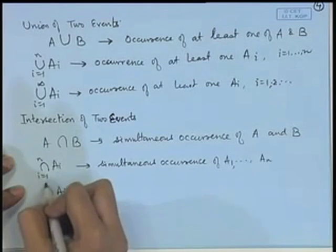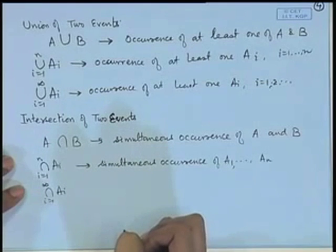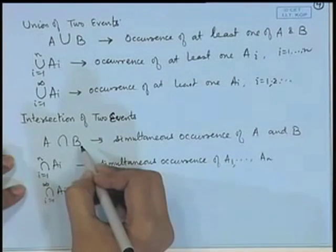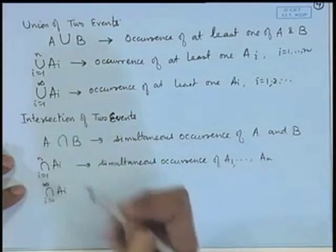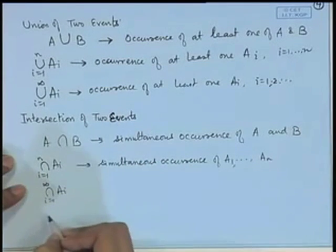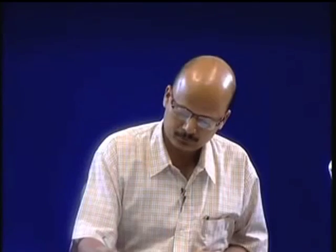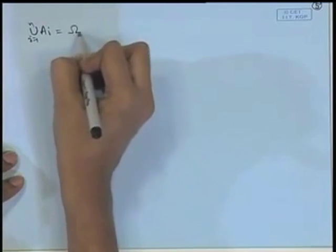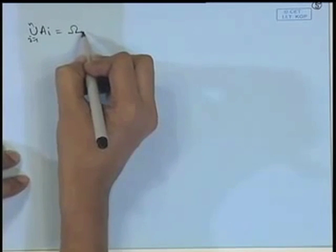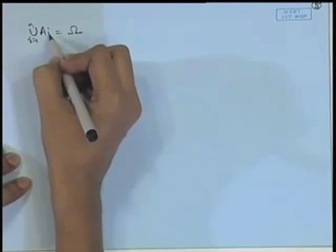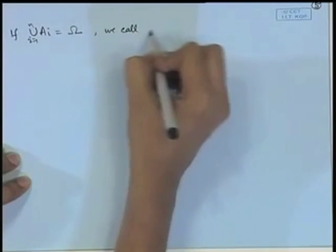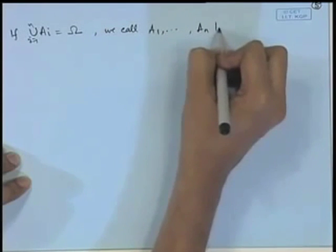When we consider unions or intersections, certain basic properties apply. For example, if the union of Aᵢ for i = 1 to n equals omega, that means all points of omega are contained in one or the other of the Aᵢ's. Such events are called exhaustive events. If the union of A₁, A₂, ..., Aₙ equals omega, we call A₁, A₂, ..., Aₙ exhaustive events. In place of n, we may also have an infinite collection of events.